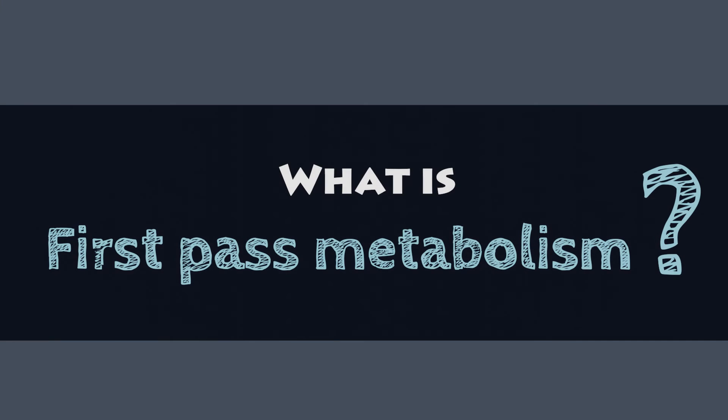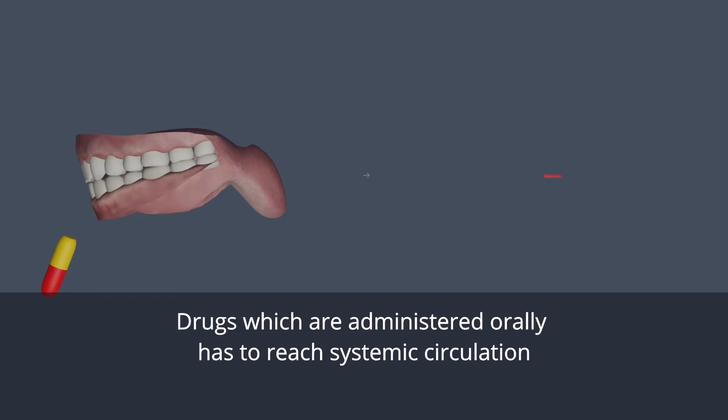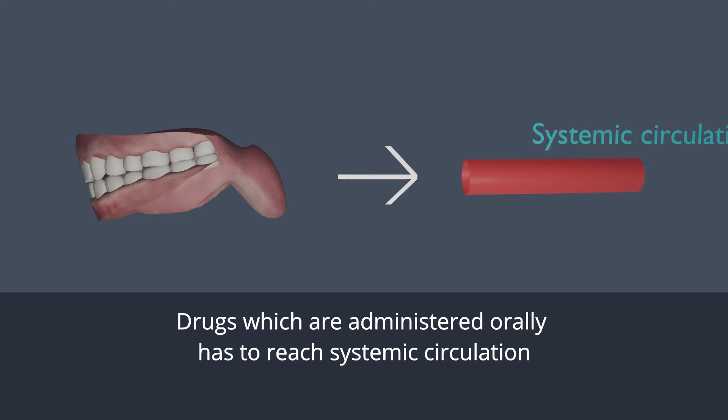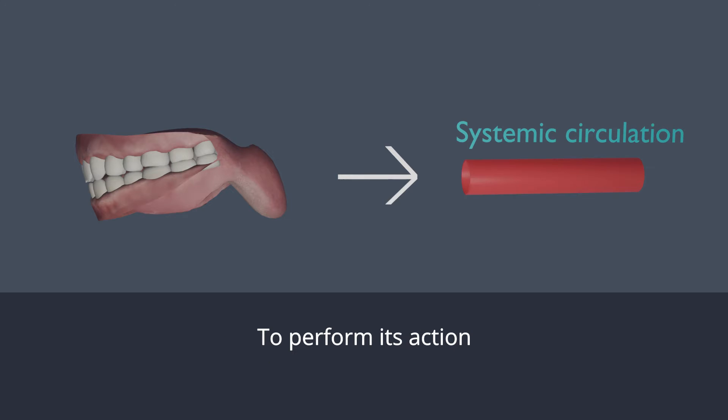What is first-pass metabolism? The drugs which are administered orally have to reach the systemic circulation to perform their action.